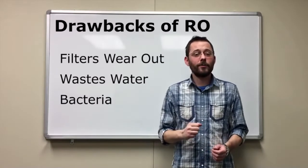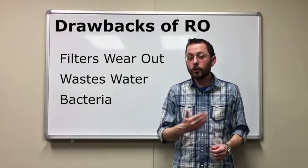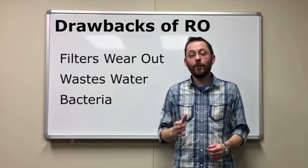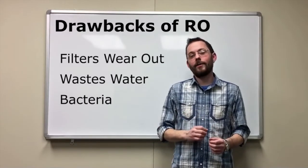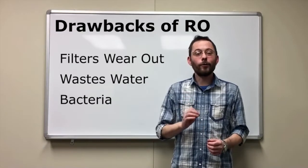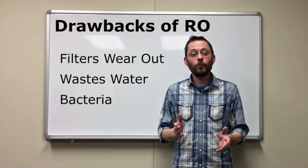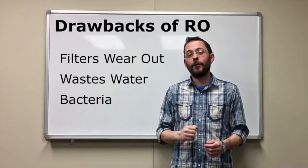What are the drawbacks of an RO system? First of all, it is a filter. Filters eventually deteriorate and need replacement. With so many filters in an RO system, the maintenance expense can be quite costly. Second, RO systems can waste water. Some residential systems can waste up to 10 gallons just to produce one gallon of purified water.